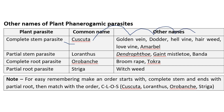For partial stem parasite Loranthus, other names include Dendrophthoe, giant mistletoe, and Banda. For complete root parasite Orobanche (Warabanki), other names are broomrape and Tokra. For partial root parasite Striga, the well-known other name is witchweed — this has been asked in many exams.